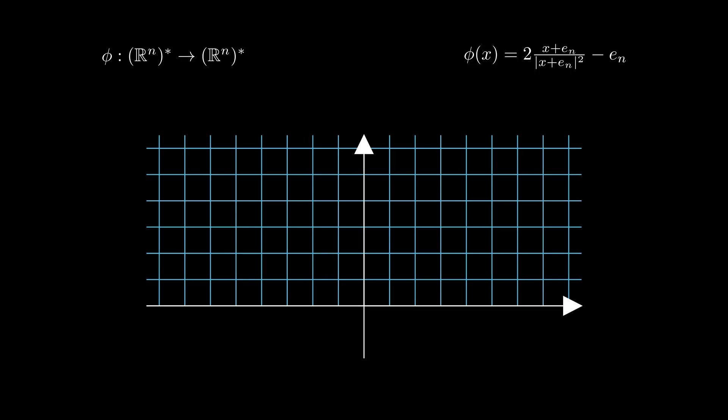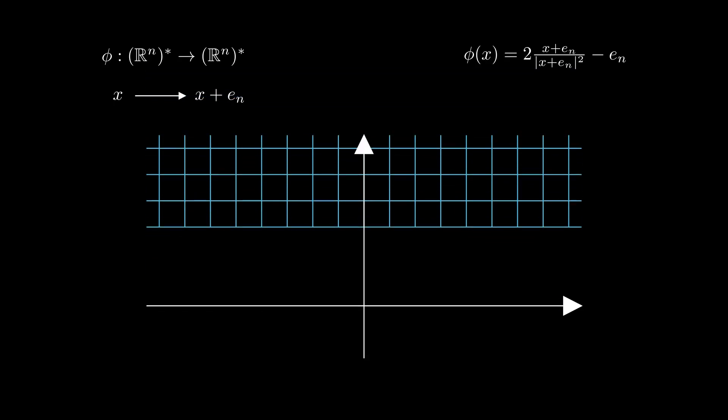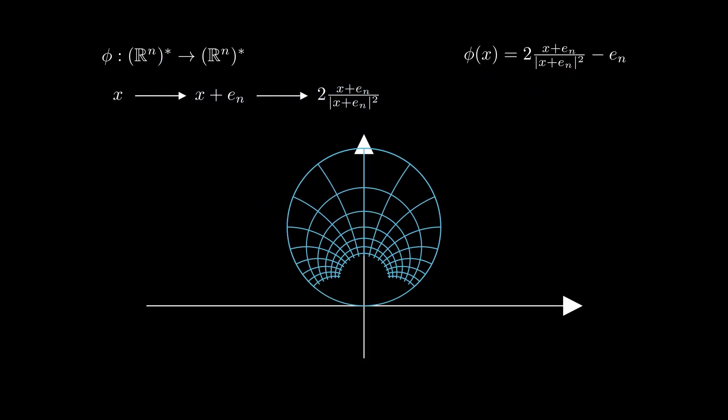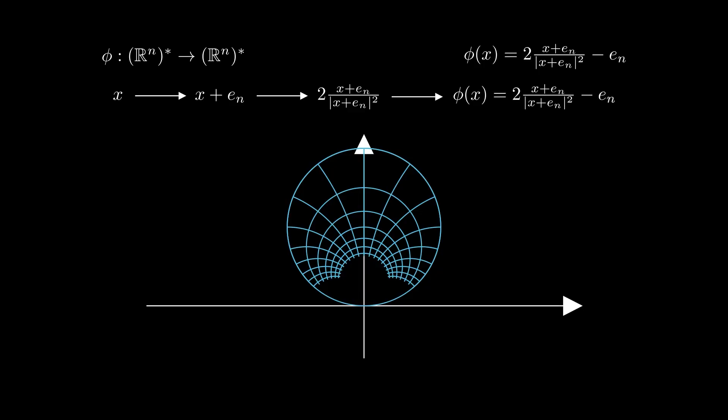The function phi is the composition of three functions. Translation by e_n, which shifts everything up, multiplying by 2 and dividing over the norm squared, and then translation by minus e_n, which shifts everything back down.